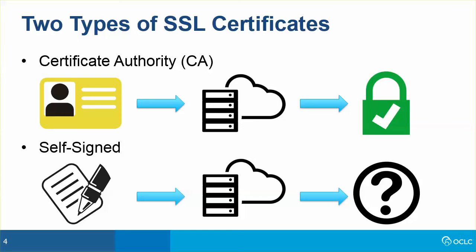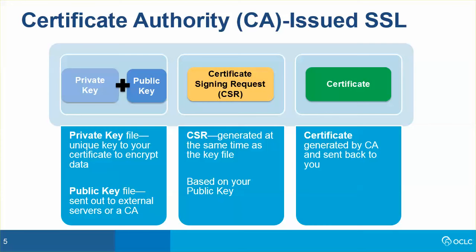A Certificate Authority-issued SSL certificate consists of three parts. The private key file contains a key unique to your certificate that is used to decrypt data sent over the internet. This file is installed on your server and must not be shared. The public key file is sent out to external servers or a certificate authority and is used by outside entities to encrypt information that your server can decode using your private key.